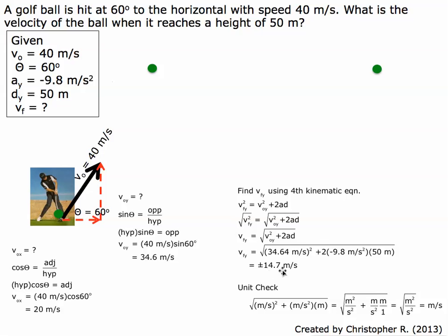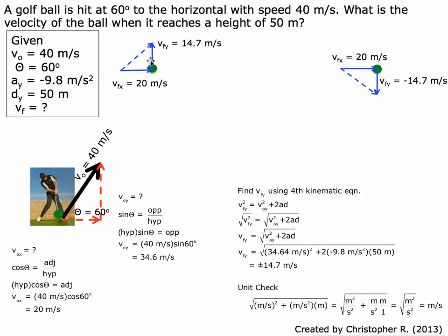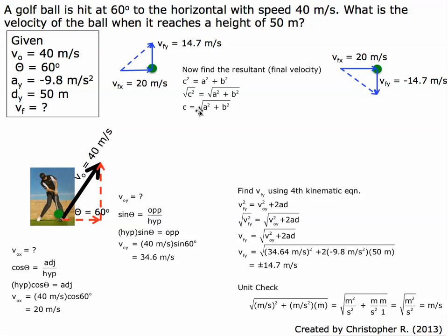The result is 14.7 meters per second, plus or minus. So the positive 14.7 meters per second applies on the way up, and negative 14.7 meters per second applies on the way down. The velocity in the x direction is always 20 meters per second. To find the resultant final velocity, we use Pythagoras' theorem: c equals the square root of a squared plus b squared. Note we have the plus or minus, so we'll do this twice to double check.